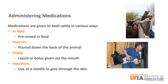Finally, medications can be given through injection. There are different types of injections, but they consist of using a needle to administer the medication through the skin directly into the animal. There are many different medications that can be given via injection, like antibiotics, pain relievers, dewormers, hormones for reproduction, and many others.